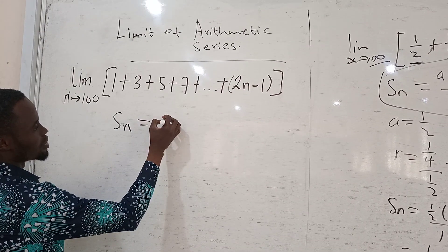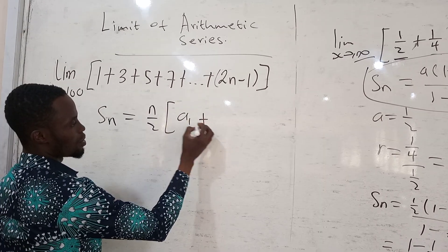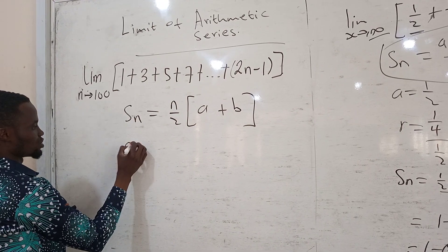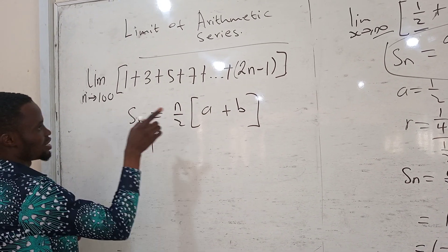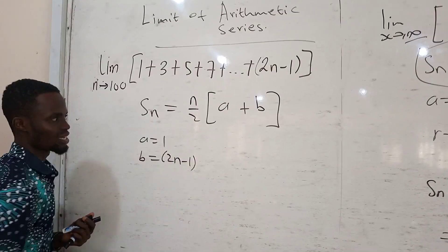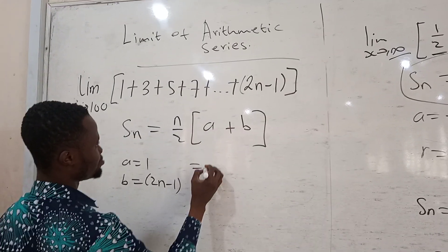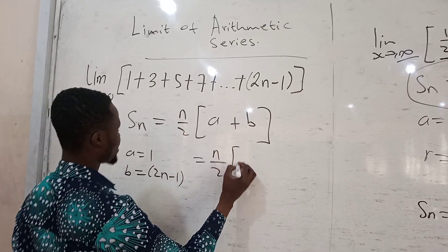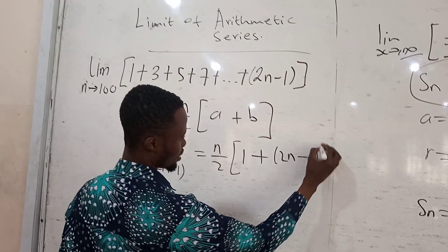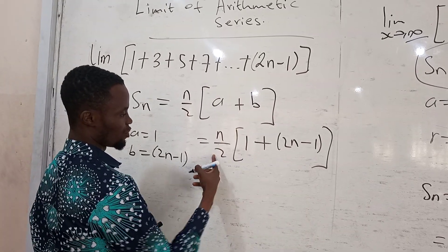We have a general formula for finding the sum of an arithmetic series. The sum S equals n over 2 times (a + b), where a is the first term and b is the last term. Here the first term a equals 1 and the last term b equals 2n minus 1. Substituting in, you get n over 2 times (1 plus 2n minus 1).